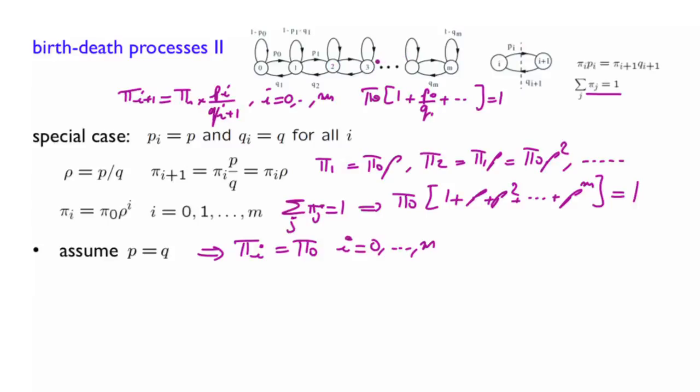There is no bias in either direction. You might think that in such a process, you will tend to get stuck either near one end or the other. It turns out that no. In the long run, this symmetric random walk is equally likely to be at any of those states. For this special case, this equation here is simply that pi of 0 times 1 plus m equals 1, meaning that pi of 0 equals 1 over 1 plus m.